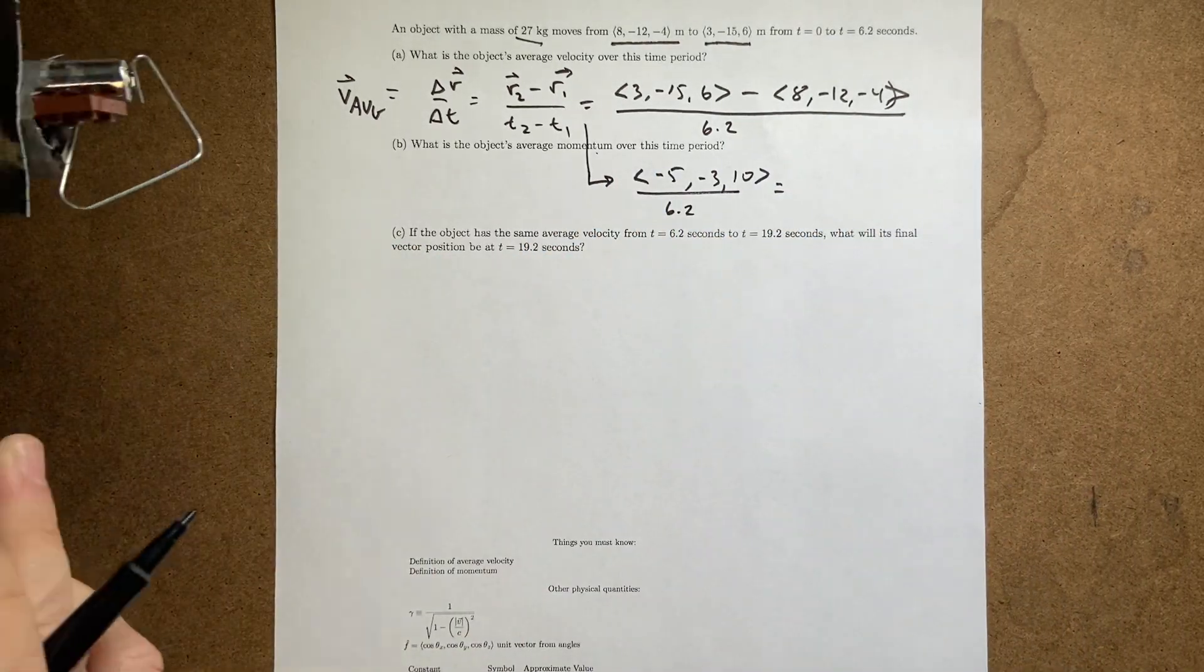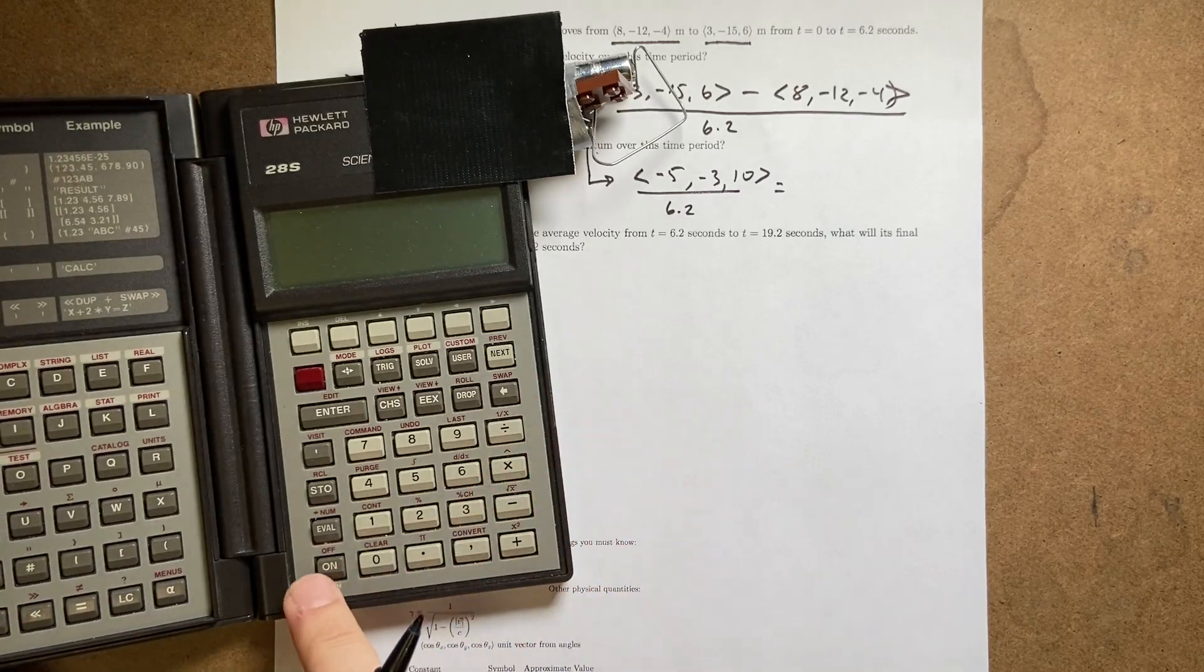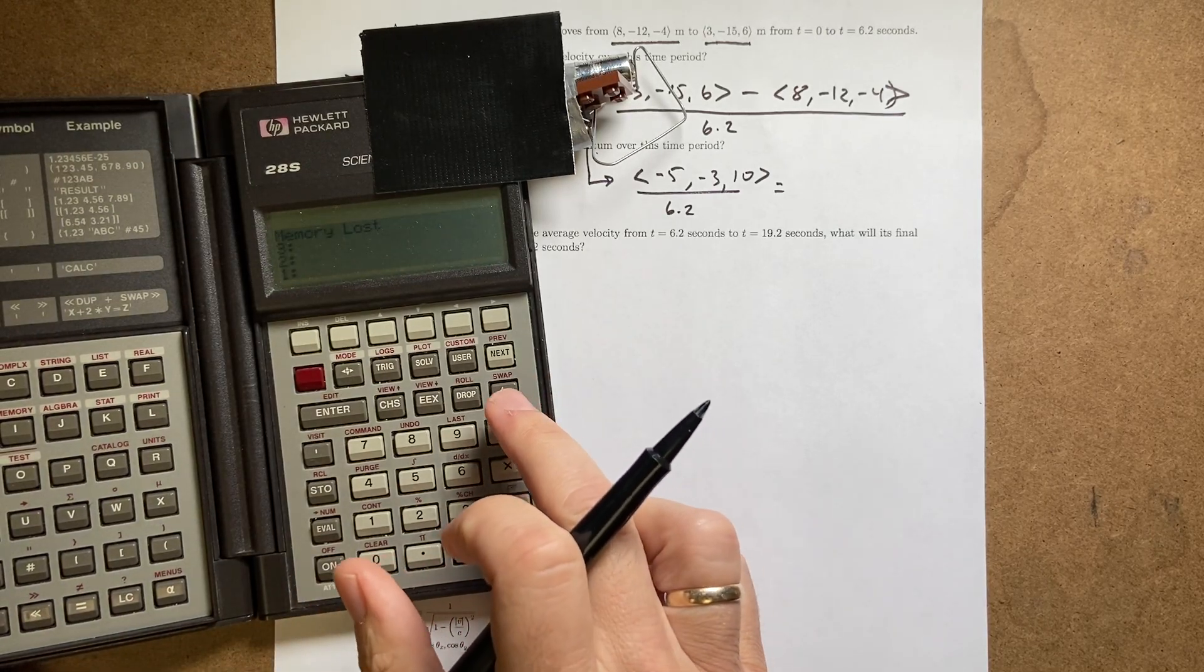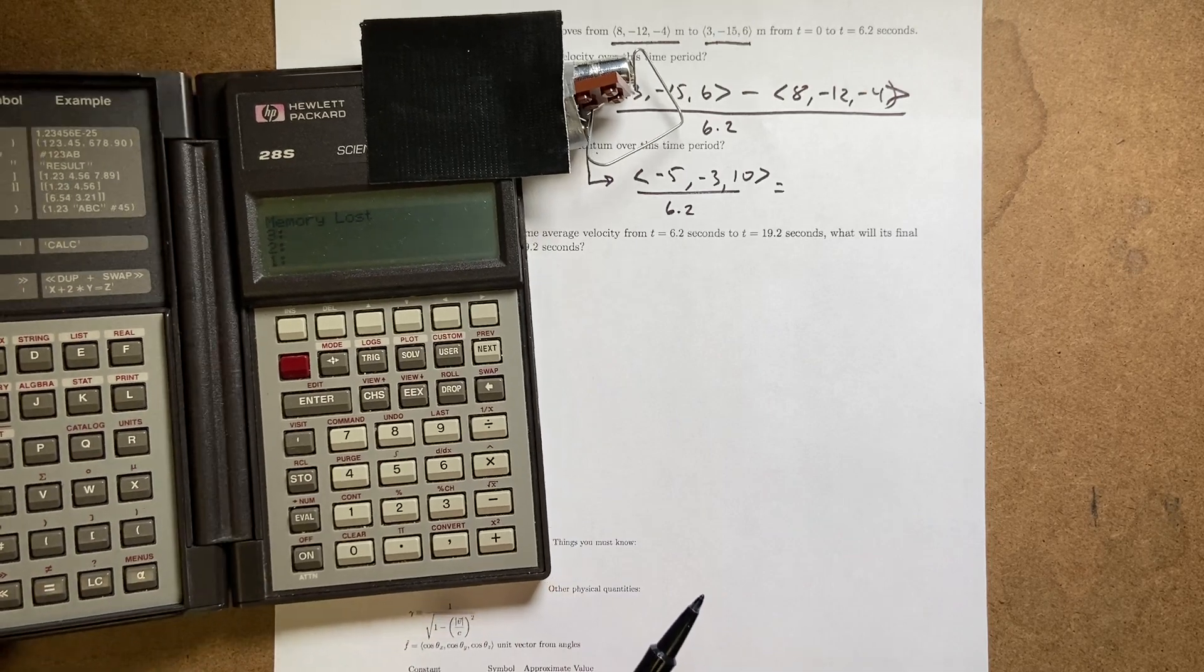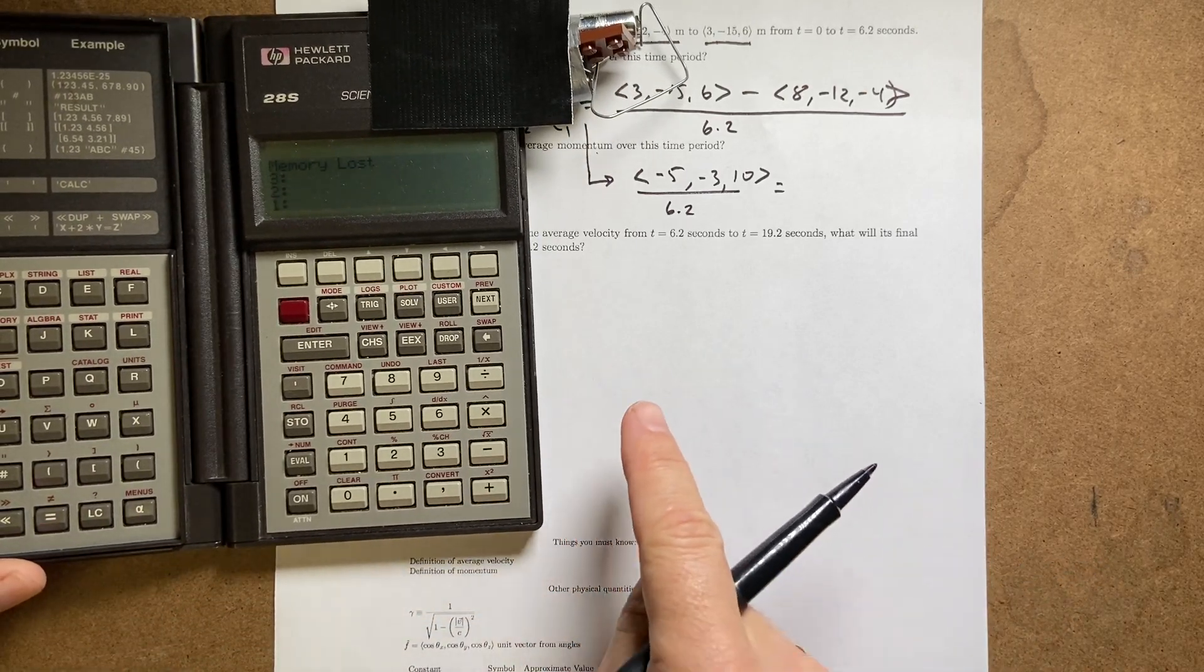Now I can divide each component by that scalar value. In this case, I'm actually going to switch to my calculator. If you haven't seen this before, this is my old Hewlett Packard RPN calculator. So it's a little bit different.